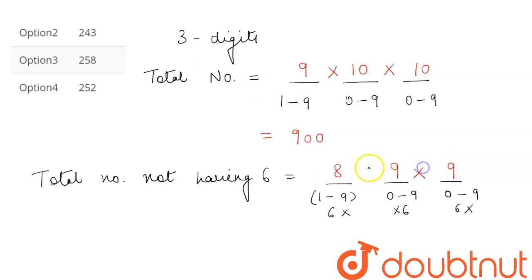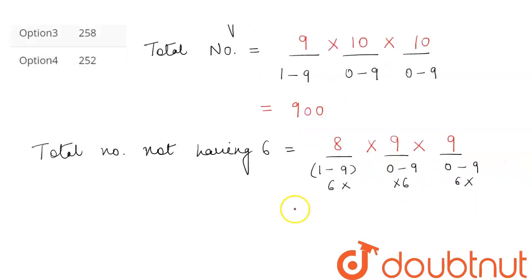So the total number of outcomes will come out to be equal to 648.